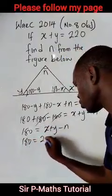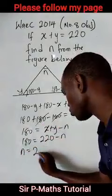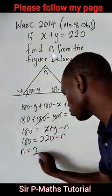Then let's collect like terms again. I have n equal to 220 minus 180. n is equal to 40. This is our answer.